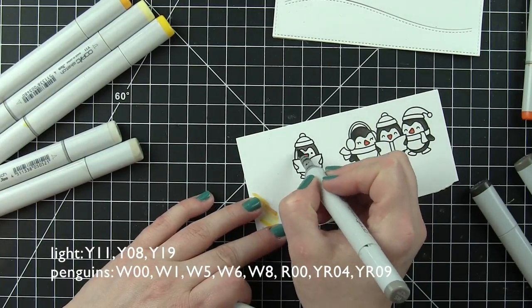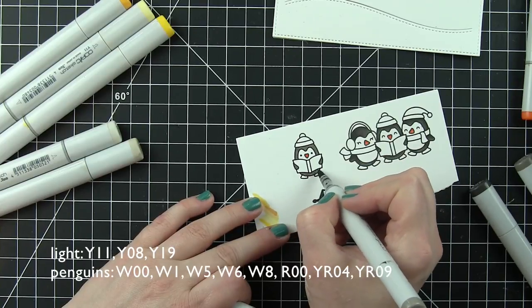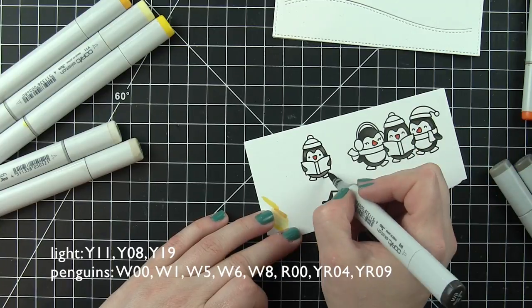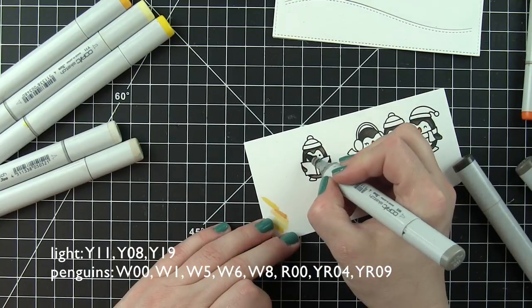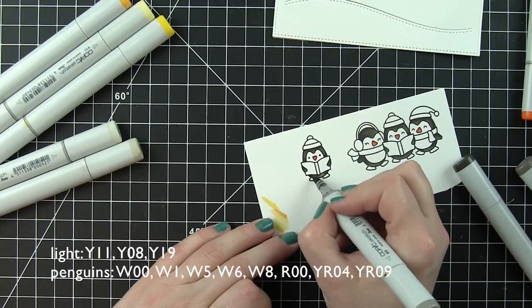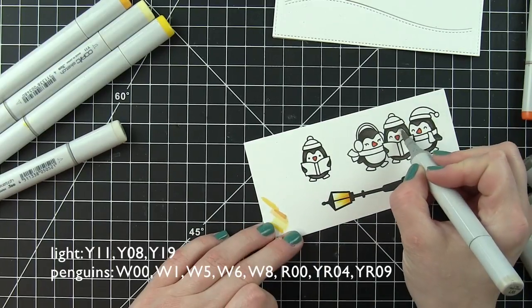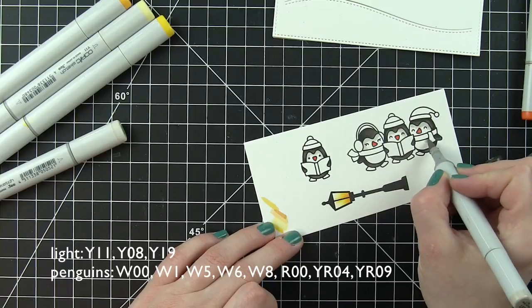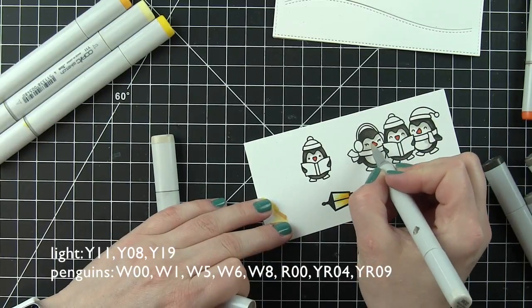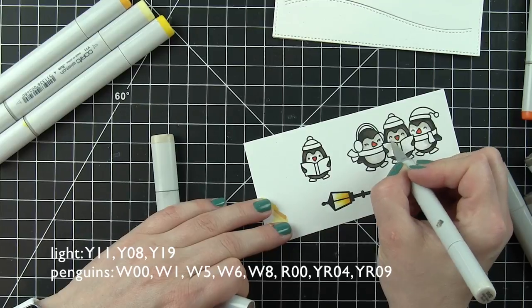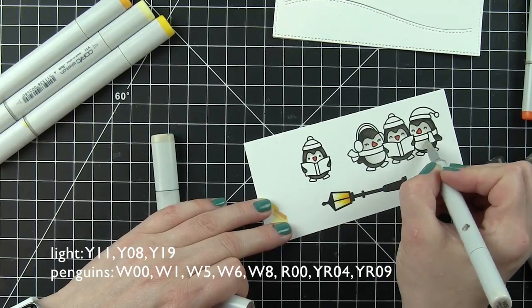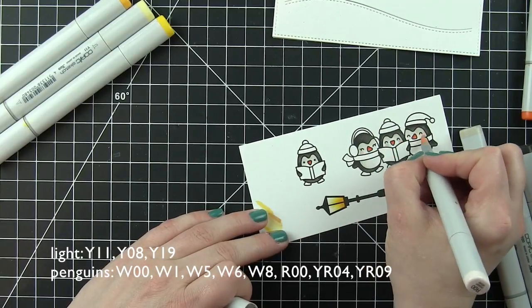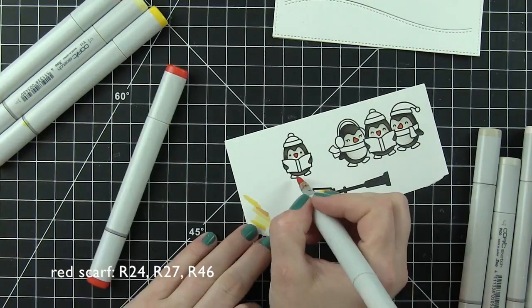And then the penguins, to build up to the black shade or tone of the majority of the penguin image, I am using warm gray markers to get that effect with warm gray 5, 6, and 8. For the lighter areas on the penguins, I'm using warm gray 0 and 1 with a little R00 for the cheeks on the penguins to pinken them up. They're out in the cold after all so I want their little cheeks to be nice and rosy.